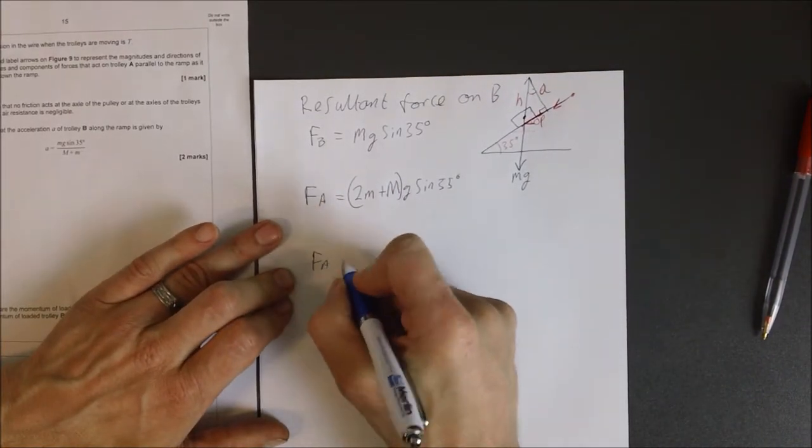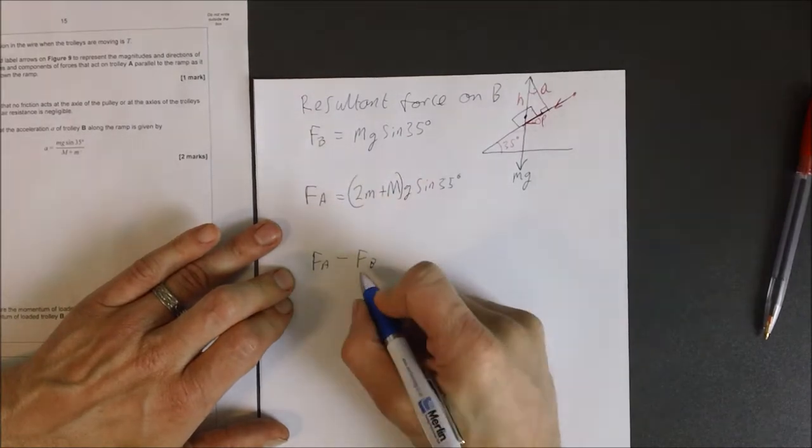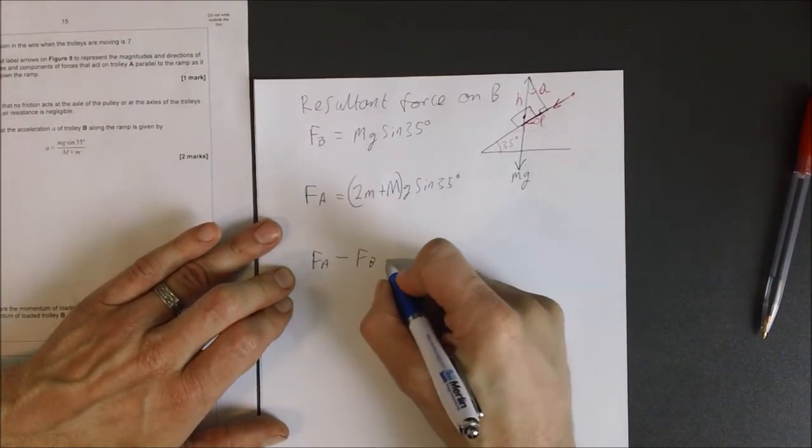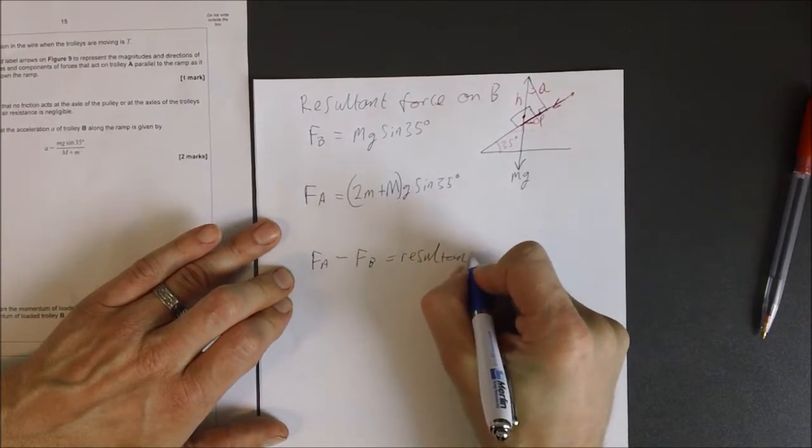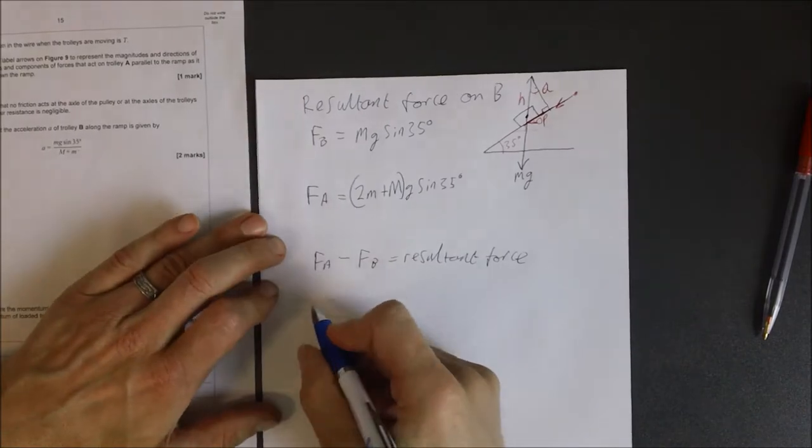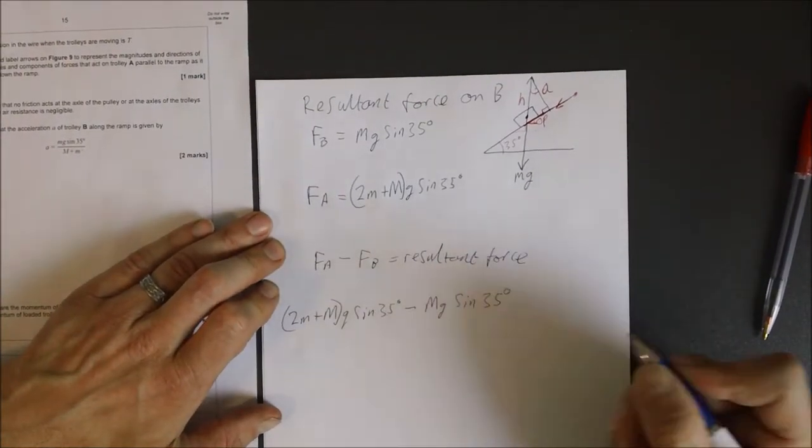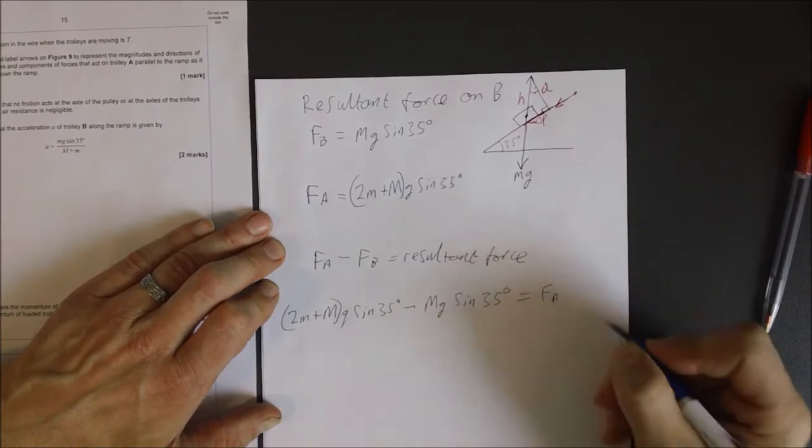Let's just say that F A minus F B is going to equal our resultant force. So let's put those values in. Equals our resultant force. And let's just call that F R.